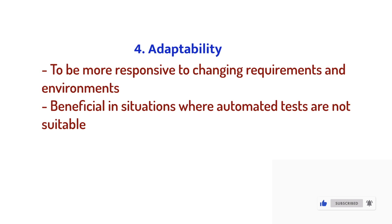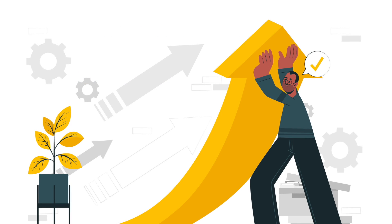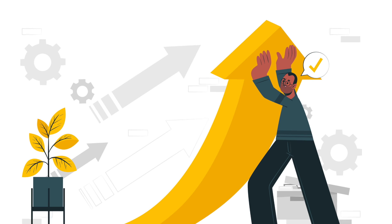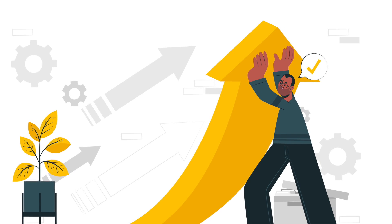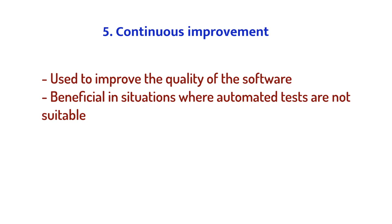By providing a flexible and agile approach to software testing, exploratory testing can help teams respond to changing requirements and environments quickly, delivering high quality software that meets customer needs. Continuous improvement: Continuous improvement is a critical aspect of the DevOps approach, and exploratory testing can be an effective way to facilitate continuous improvement in the software development process by providing feedback that can be used to improve both the software and the development process itself.